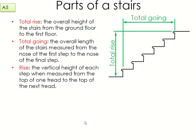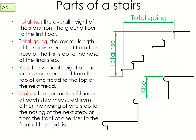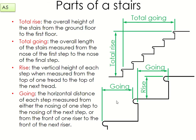The rise is the vertical height of each step measured from the top of one tread to the top of the next tread. Looking at the magnified image, the rise is from the top surface of one step to the top surface of the next. The going is the horizontal distance of each step measured from the nosing of one step to the nosing of the next step — it doesn't include the full length of the step, just the distance between the edge of one step to the edge of the next.